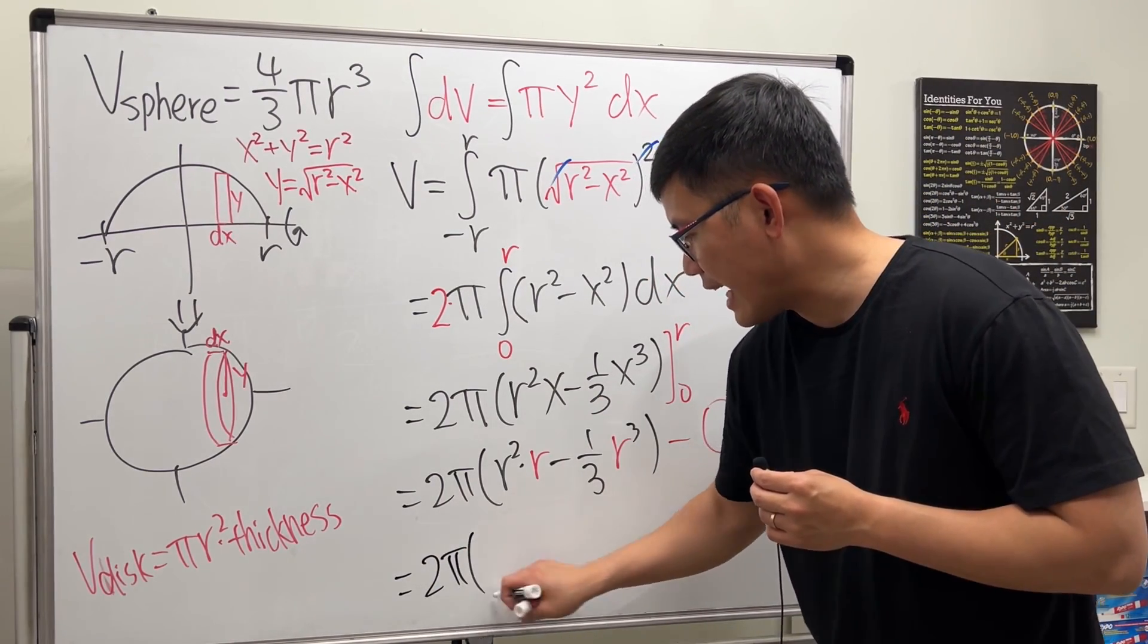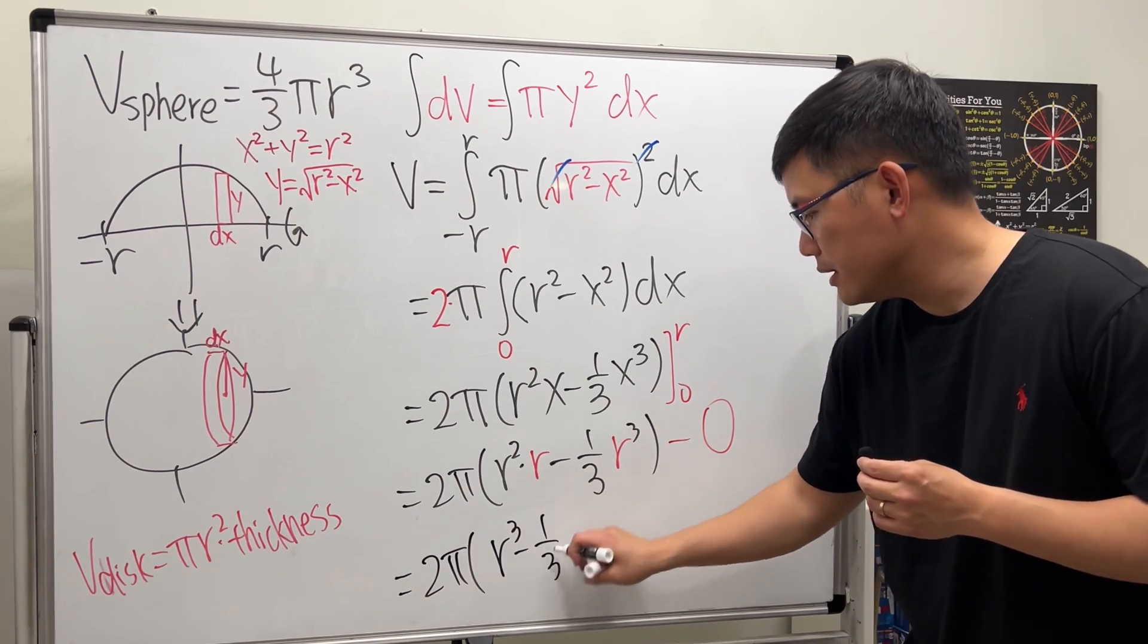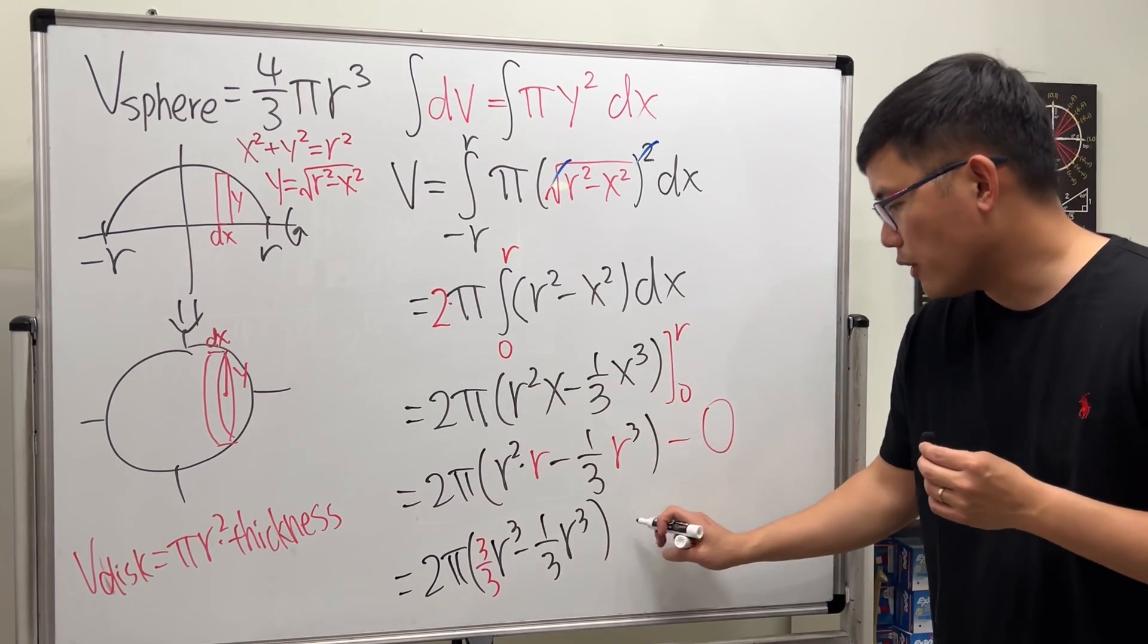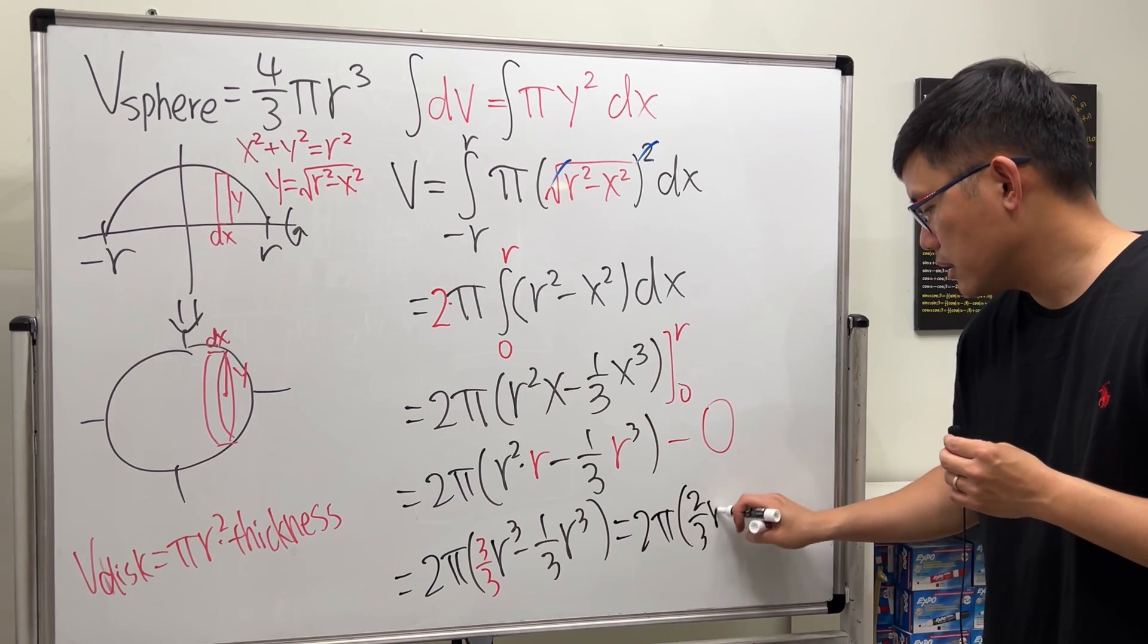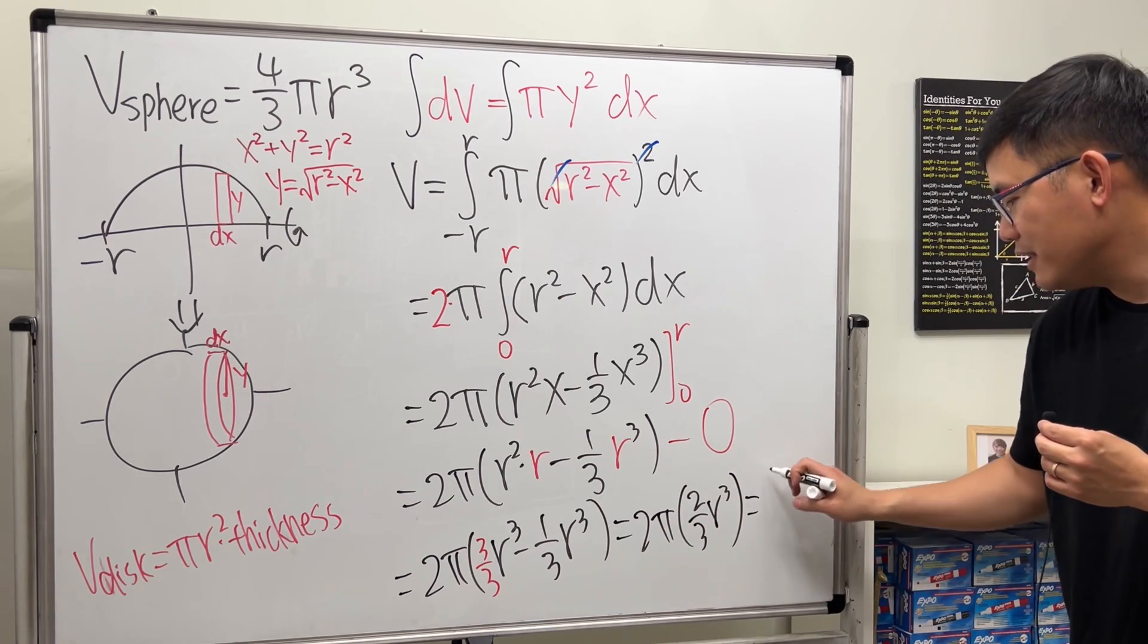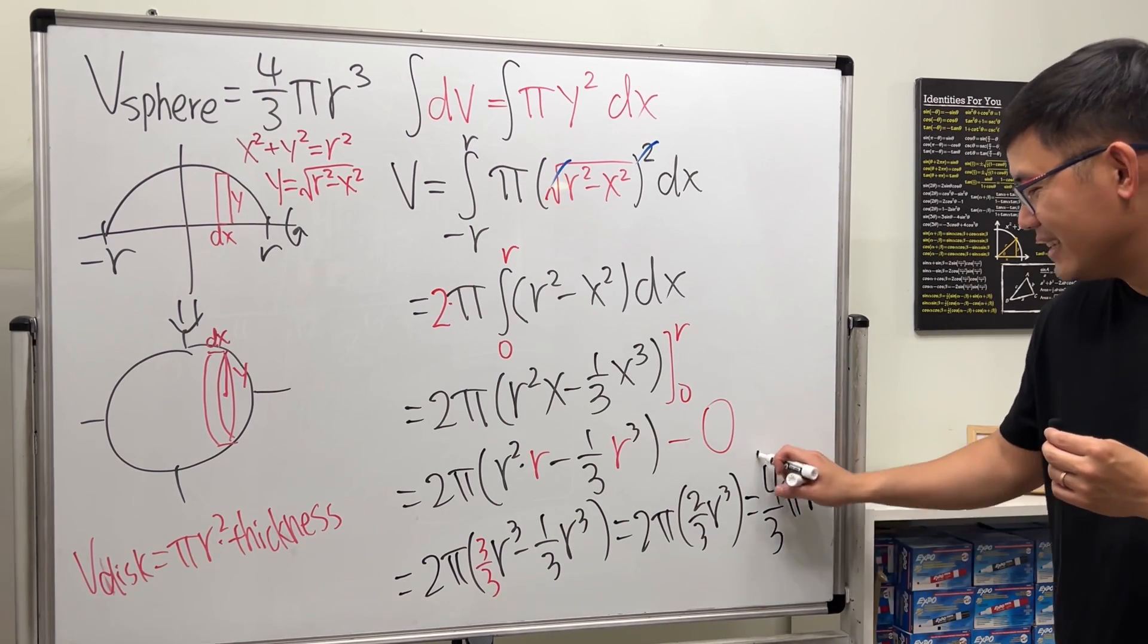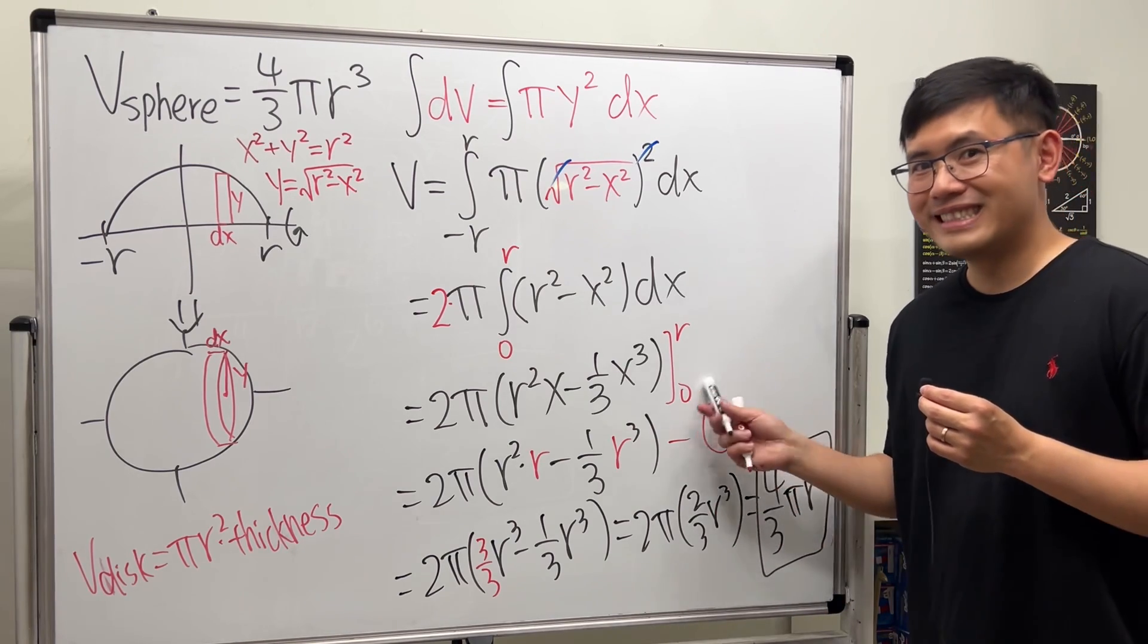And then, just work this out. We get 2π times r³ - 1/3 r³. And get the common denominator, which is just 3/3 here. And then, the inside will give us 2/3 r³. And, ladies and gentlemen, after we multiply this out, 2 times 2 gives us the 4. And then, we have the /3. πr³. And this is the formula for the volume of a sphere. That's it.